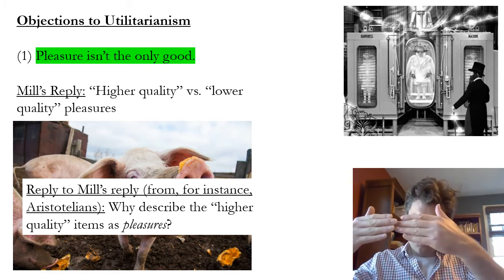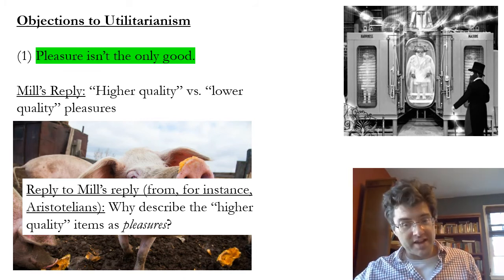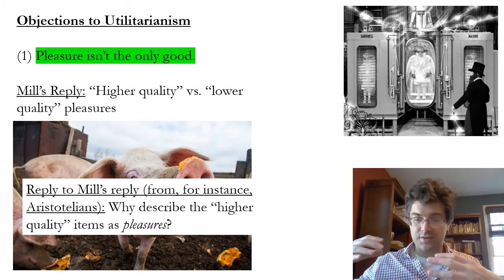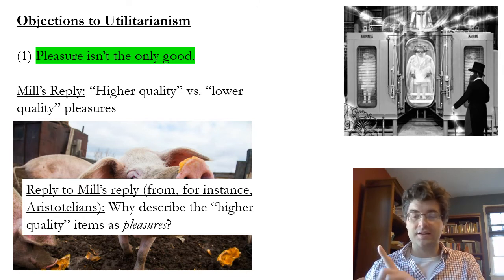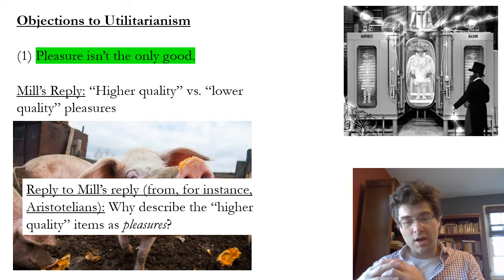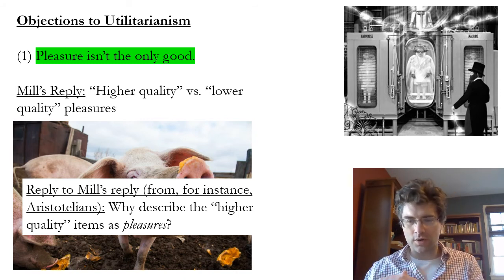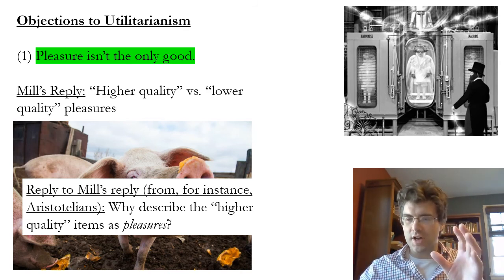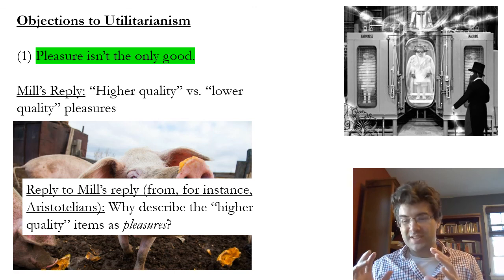What you see here is a kind of standoff between an Aristotelian picture and a utilitarian picture. Part of what Mill was trying to do was integrate Aristotelian elements into utilitarianism, recognizing that there's something good about creative expression, community connections with other people, and the pursuit of truth that aren't obviously interpretable as just a matter of seeking pleasure. His reply about the difference between higher and lower quality pleasures is intended to recognize that wider range of goods — which an Aristotelian picture already recognizes — within a utilitarian ethical framework.